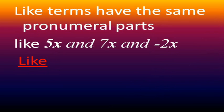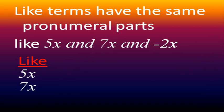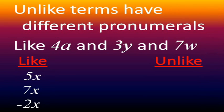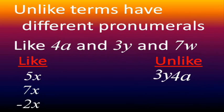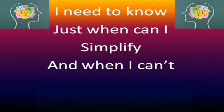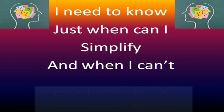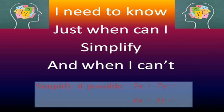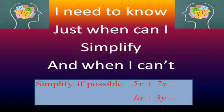Like terms have the same pronumeral parts, like 5x and 7x and negative 2x. Unlike terms have different pronumerals, like 4a and 3y and 7w. I need to know just when can I simplify and when I can't.